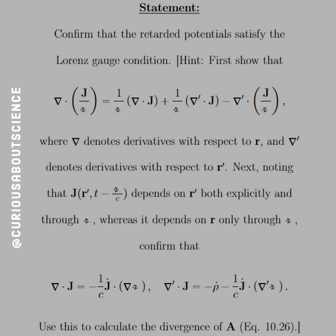So the statement wants us to confirm that the retarded potentials satisfy the Lorenz gauge condition. A hint that was given was first show that the divergence of J over R is equal to 1 over script R divergence of J plus 1 over script R, J, or divergence prime dot J minus the prime divergence of J over script R.